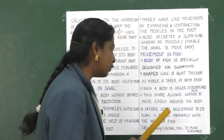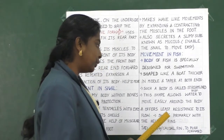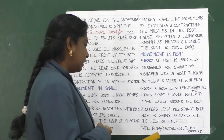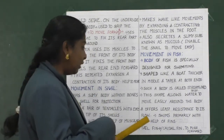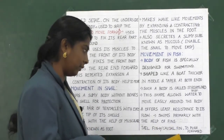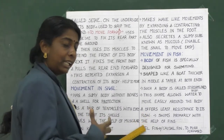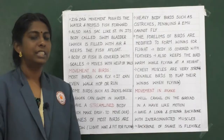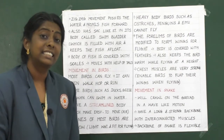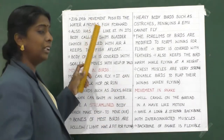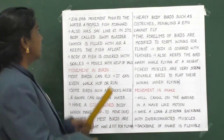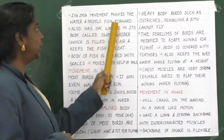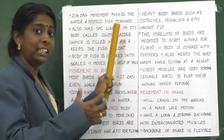Fins are used to maintain balance and to change the direction of the fish. The fish also uses its tail fin, also called the caudal fin, to push forward through water. The fish uses its tail fin from side to side, and this zigzag movement pushes the water and propels the fish forward.